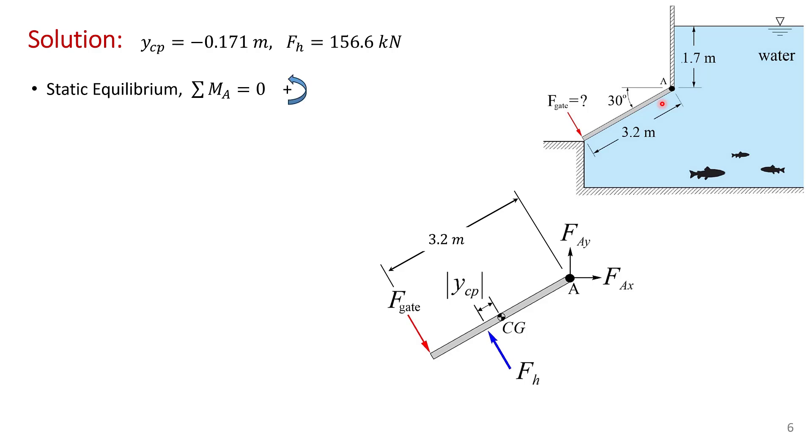So now we have the force and its location. We can do our simple static equilibrium analysis that the sum of the moments about the hinge equals 0. And I've arbitrarily taken the sum of the moments in the counterclockwise direction to be positive. So f gate acts at a distance of 3.2 meters from the hinge. And we just calculated this distance here. The location of the center of pressure is 0.171 meters below the centroid. So f h acts at the length of the gate upon 2. That'll be 1.6 meters plus 0.171 meters. So it acts at 1.771 meters.